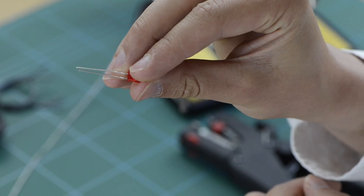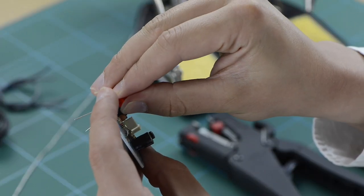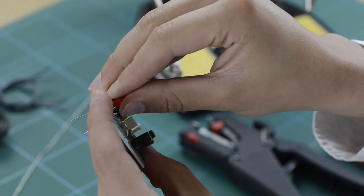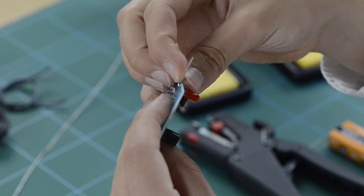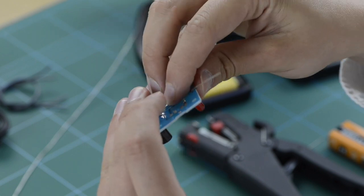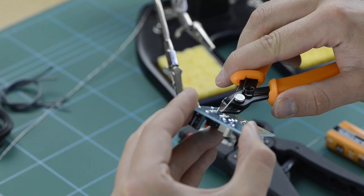Then, select your red LED and place the legs through the holes, again ensuring the long leg or anode is sitting in the hole marked with a positive symbol. Bend the legs, solder into place and remove any excess material.